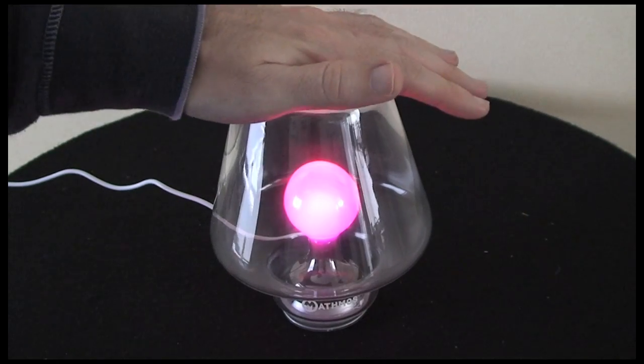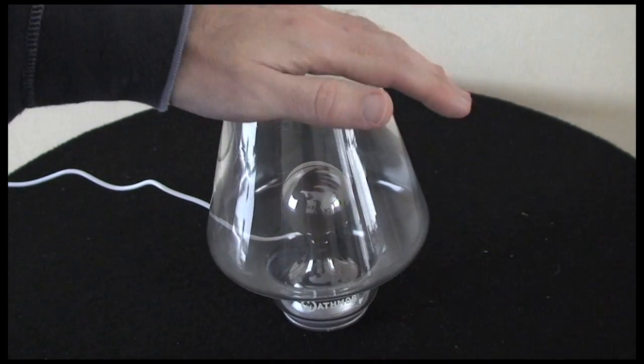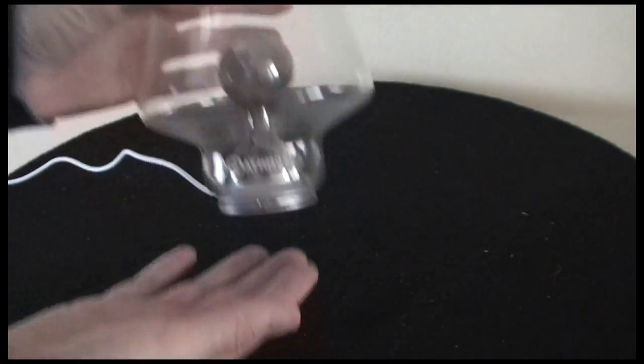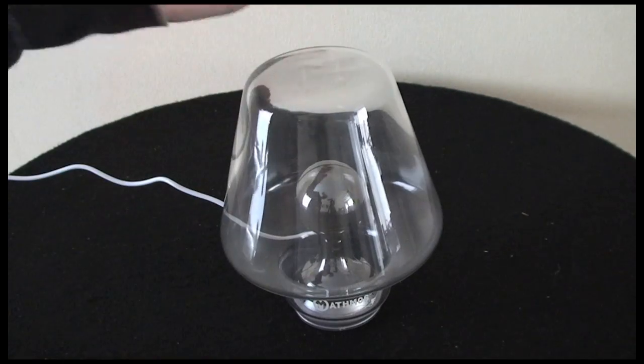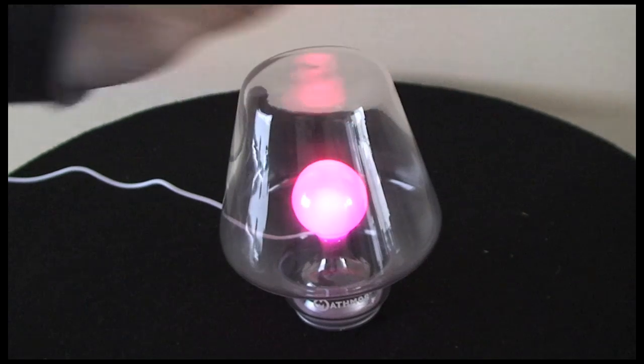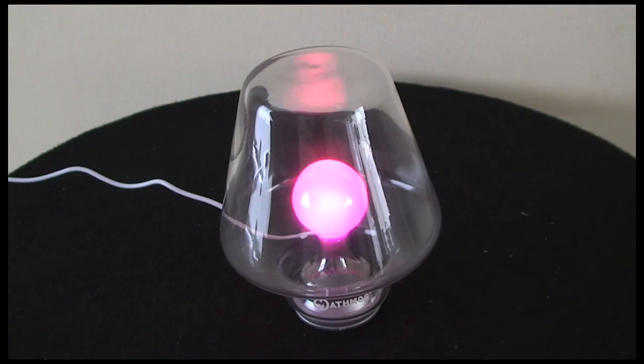To turn it off, you just simply push down on the light like so, and the base is what actually switches the light on and off, this disc here. So I can turn the light on again simply by pushing down on the top of the lamp.